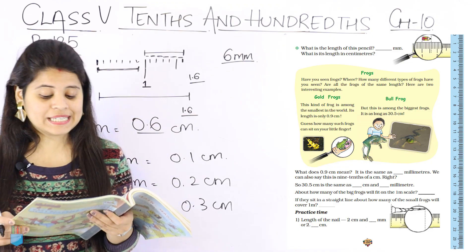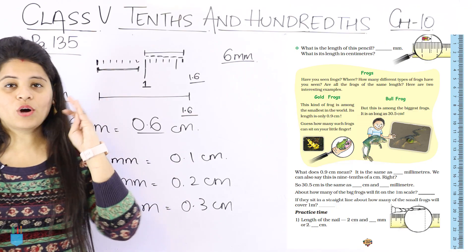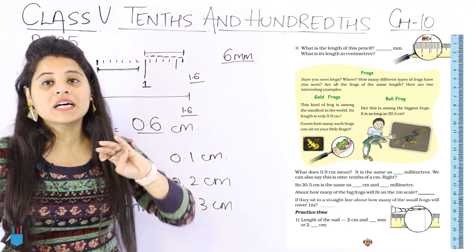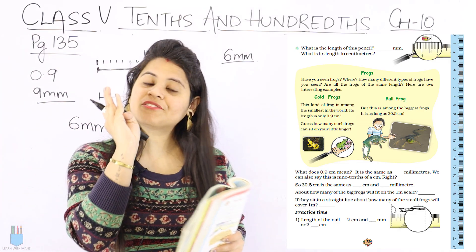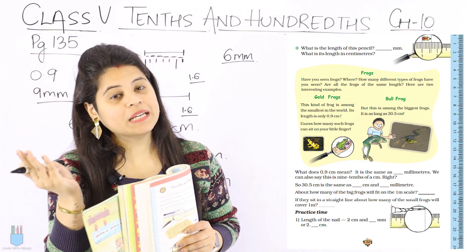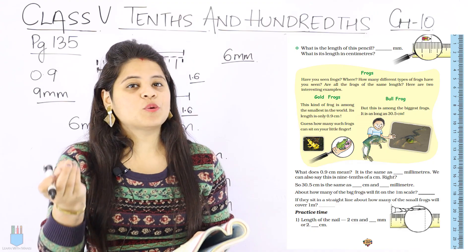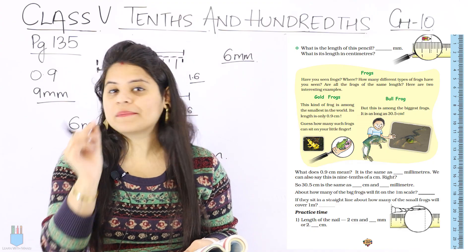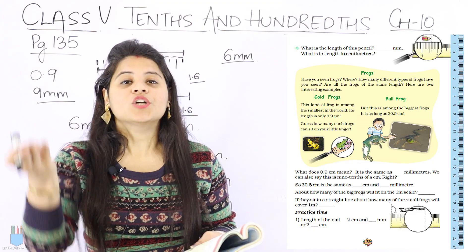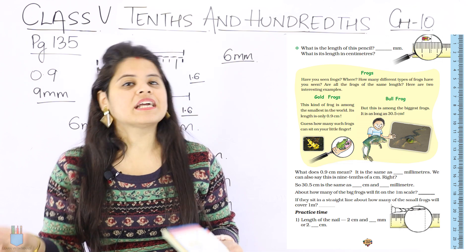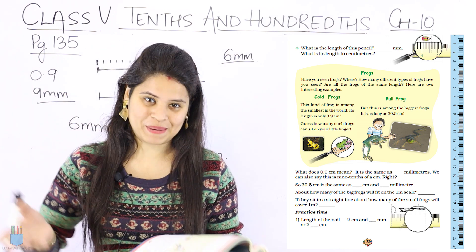The bullfrog is as long as 30.5 centimeters. Our standard scale is usually 30 centimeters, so the bullfrog is 0.5 centimeters — meaning 5 millimeters — more than that. Now, the gold frog asks: guess how many such frogs can sit on your little finger? You can measure your little finger and see how many 0.9 cm frogs fit.